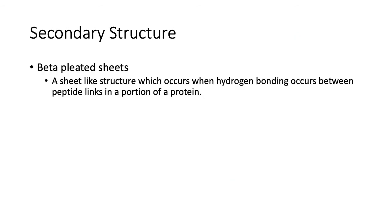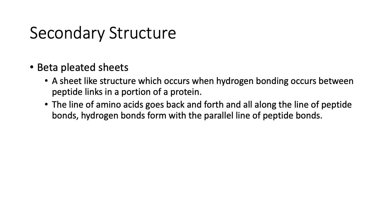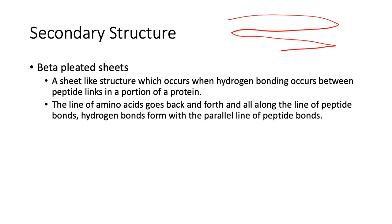Beta pleated sheets are a sheet-like structure which occurs when hydrogen bonding occurs between peptide links in a portion of a protein. A line of amino acids goes back and forth, and all along the line are peptide bonds. Hydrogen bonds form with parallel lines of the peptide bonds. So this is your amino acid chain going back and forth in a kind of flat sheet, and the peptide bond here and the peptide bond there can form a hydrogen bond — they all form hydrogen bonds holding this sheet together.